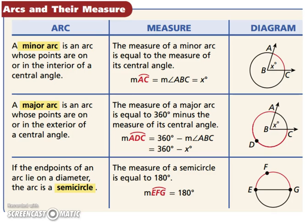We have a minor arc and a major arc. A minor arc is an arc whose points are on or in the interior of a central angle, whereas a major arc is an arc whose endpoints are on or in the exterior of a central angle. A minor arc is labeled with two points, a major arc is labeled with three points. Now if you look at the diagram, arc AC would be a minor arc, whereas arc ADC would be a major arc.